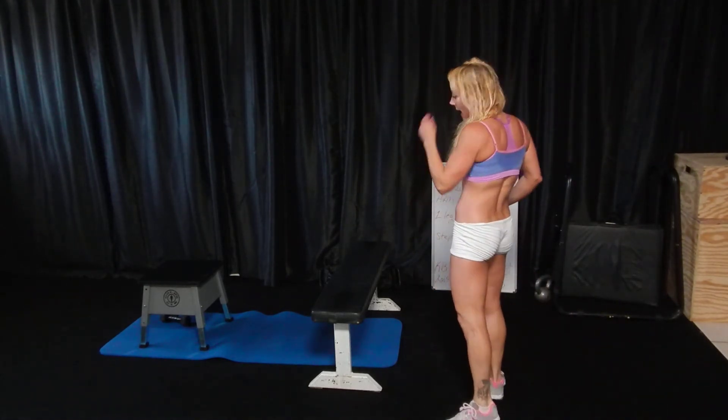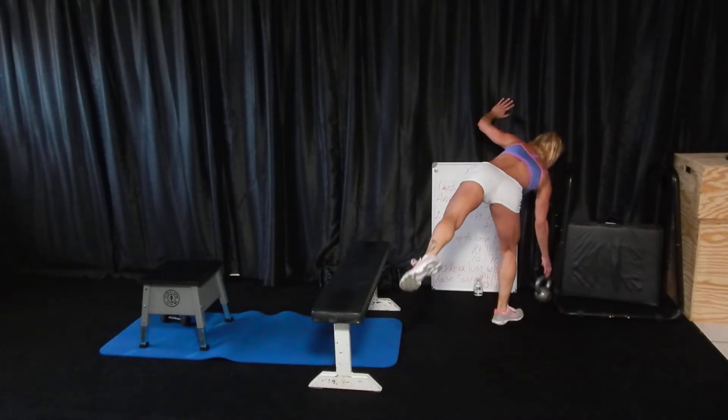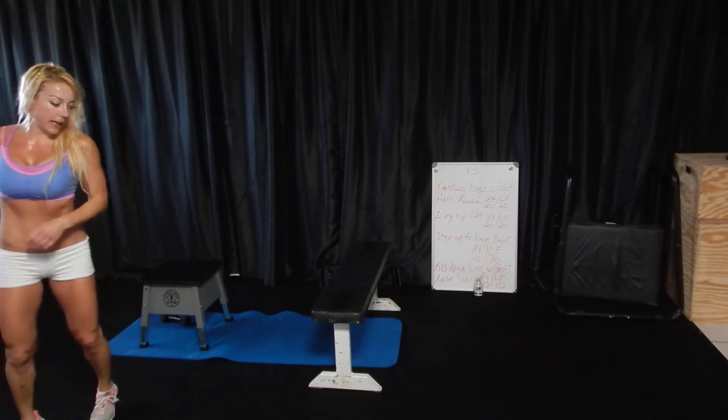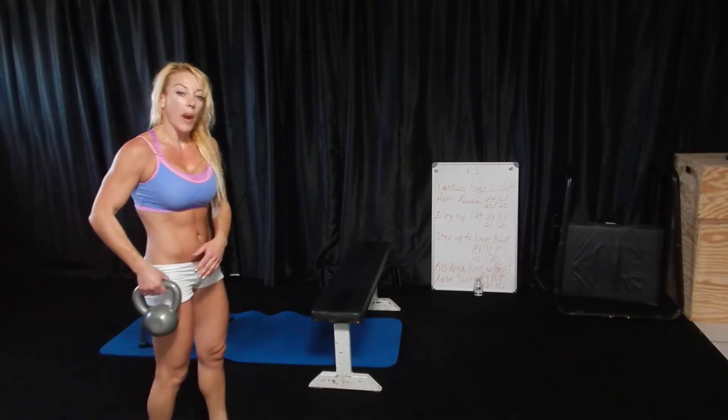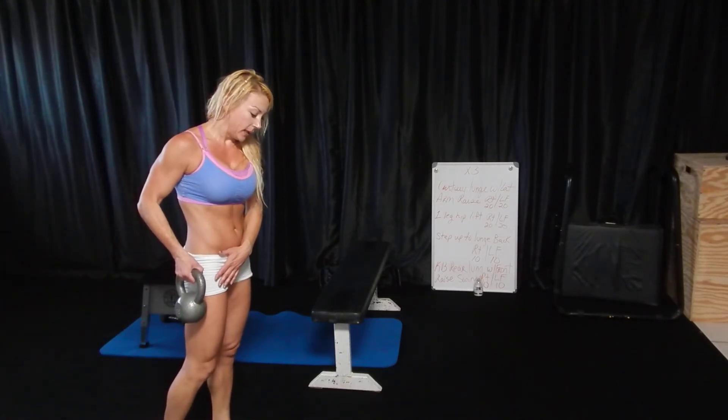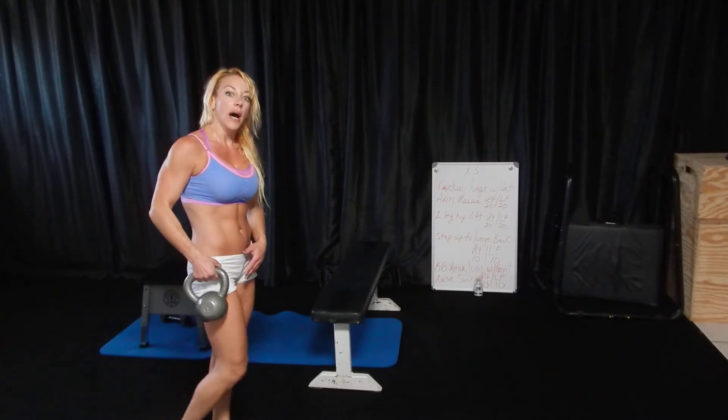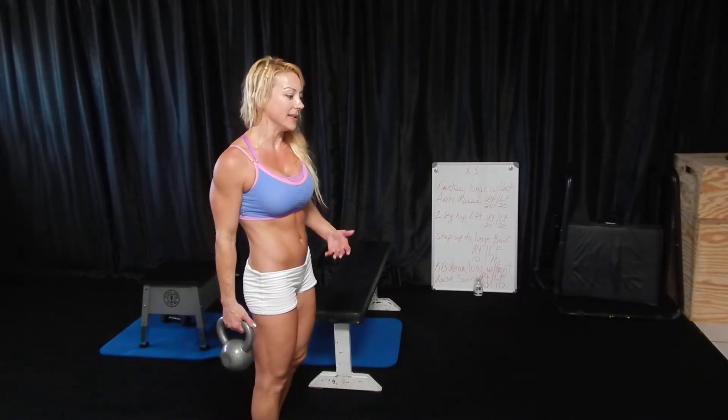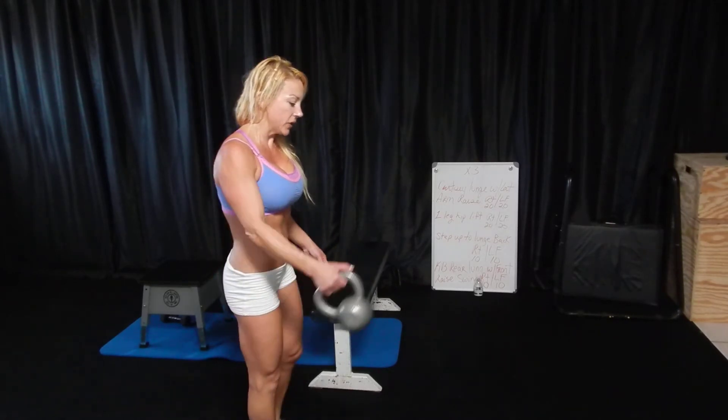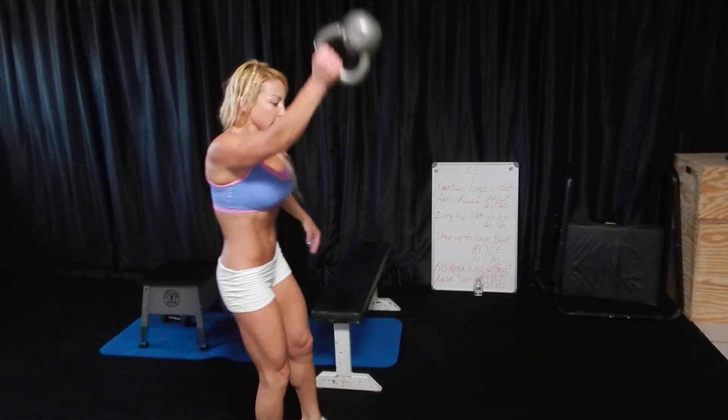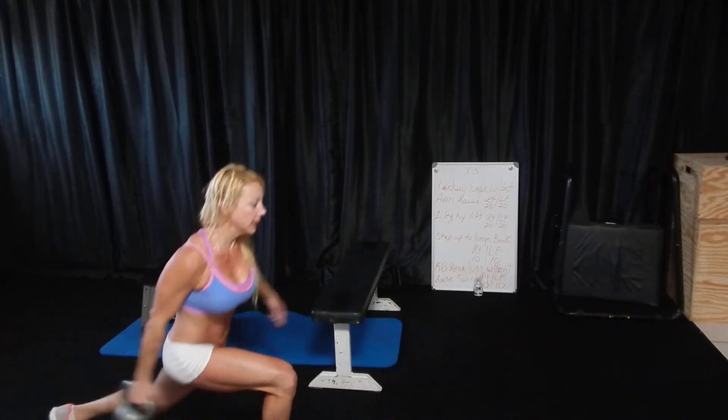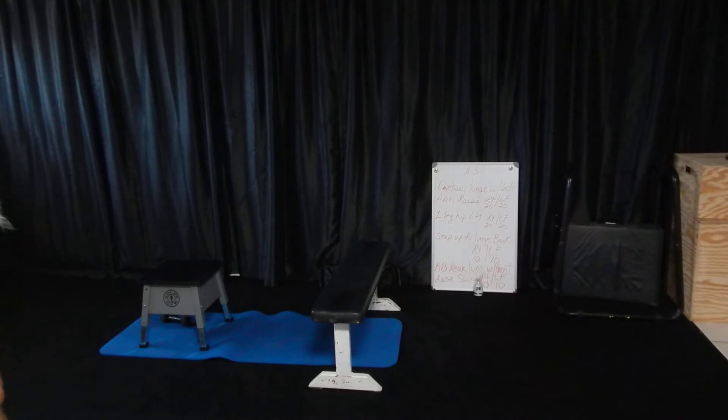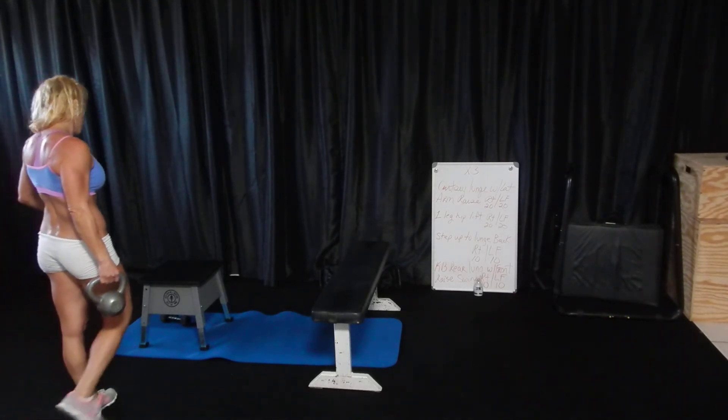And then the last one that I actually used a kettlebell for, and again you can use a dumbbell or nothing, the weight if you're using weights in the side of the stationary leg. Well, it's not stationary because it actually bends, but it's stationary meaning the foot doesn't leave the ground. So you're going back and up, and back, and up, and that particular move takes a lot of core as well as the booty and the shoulder.